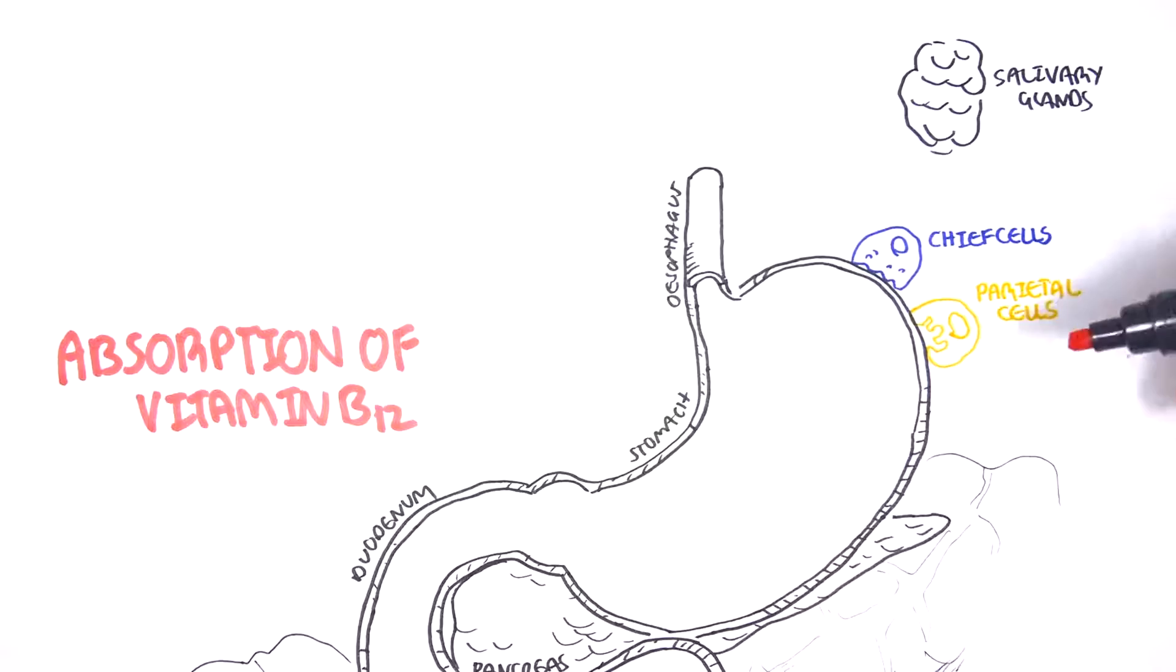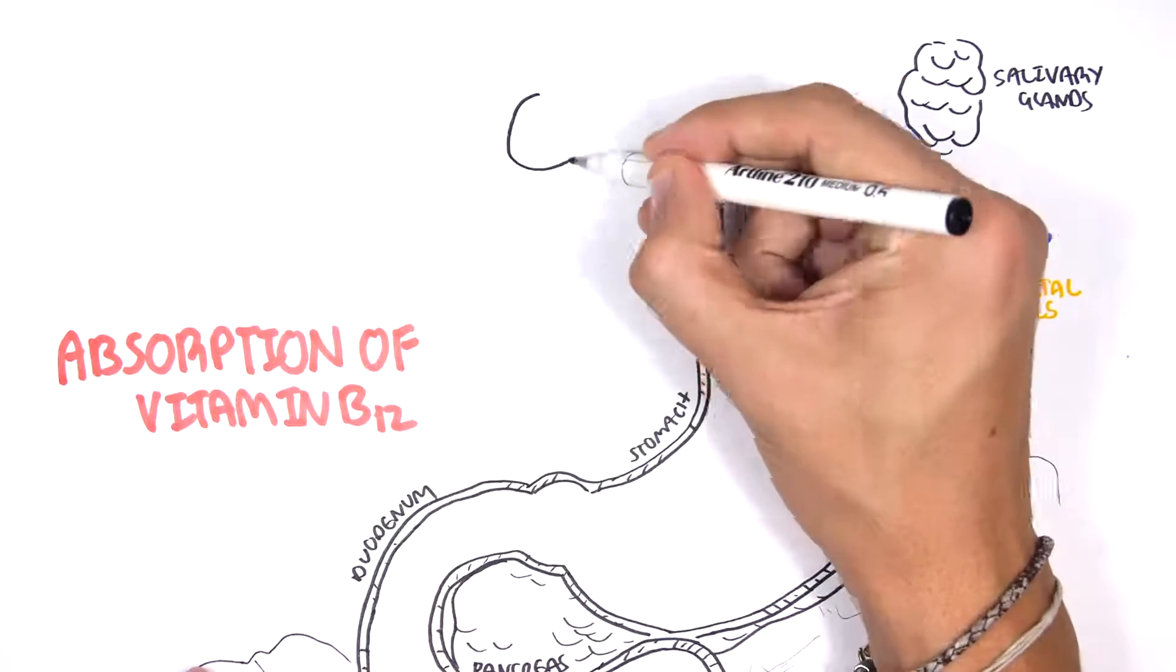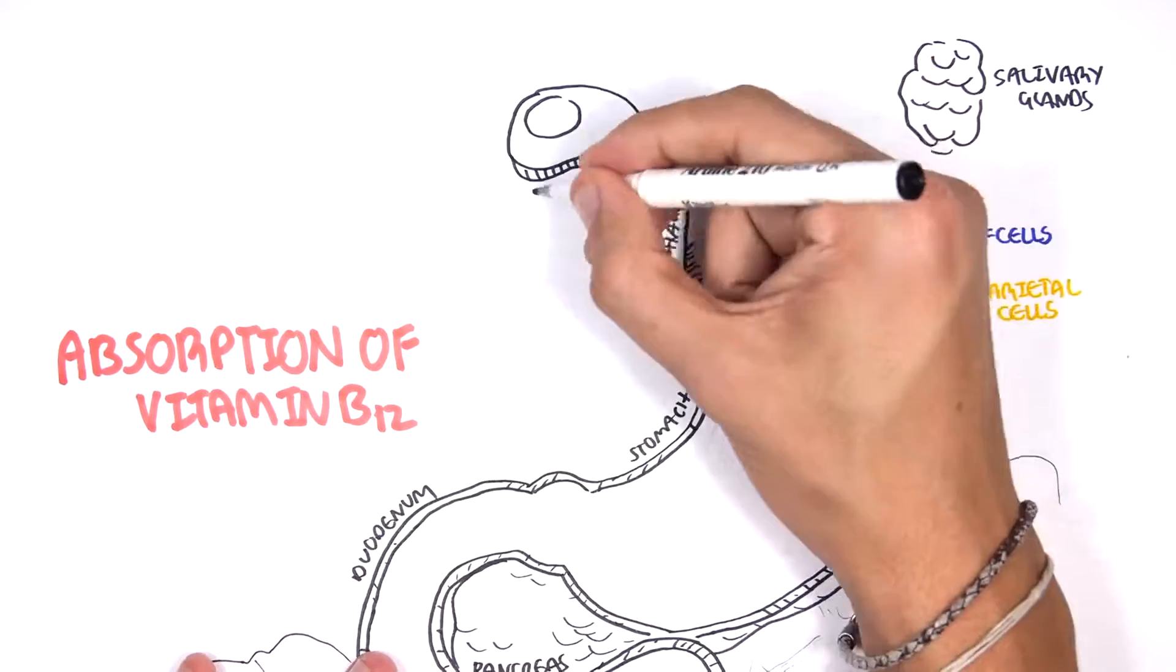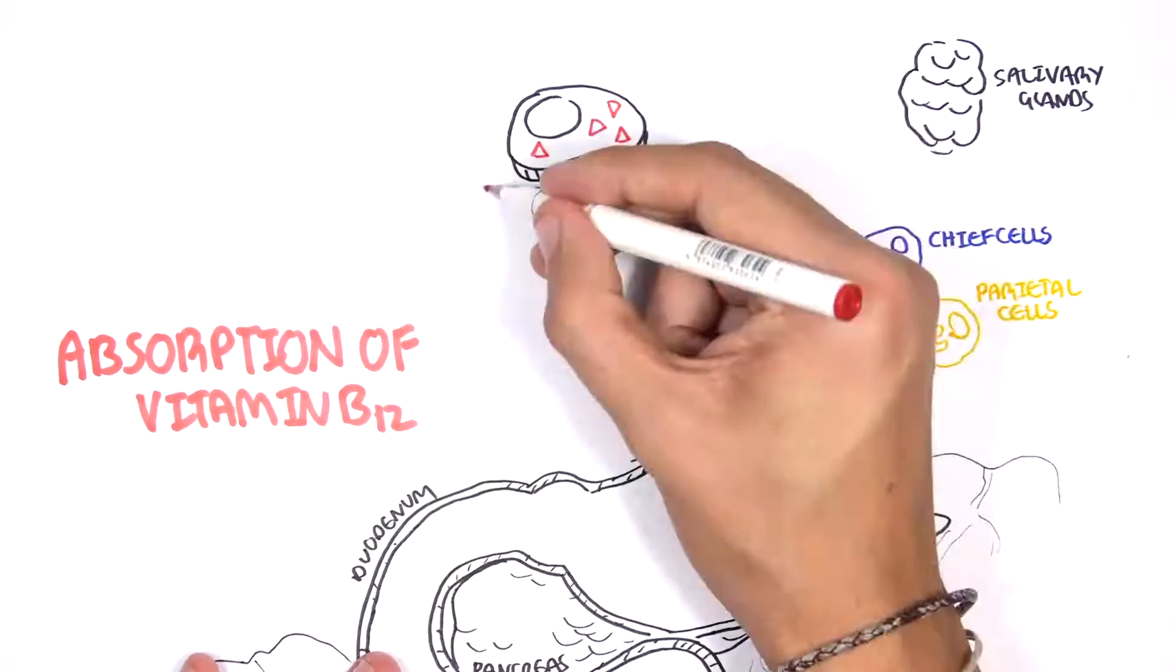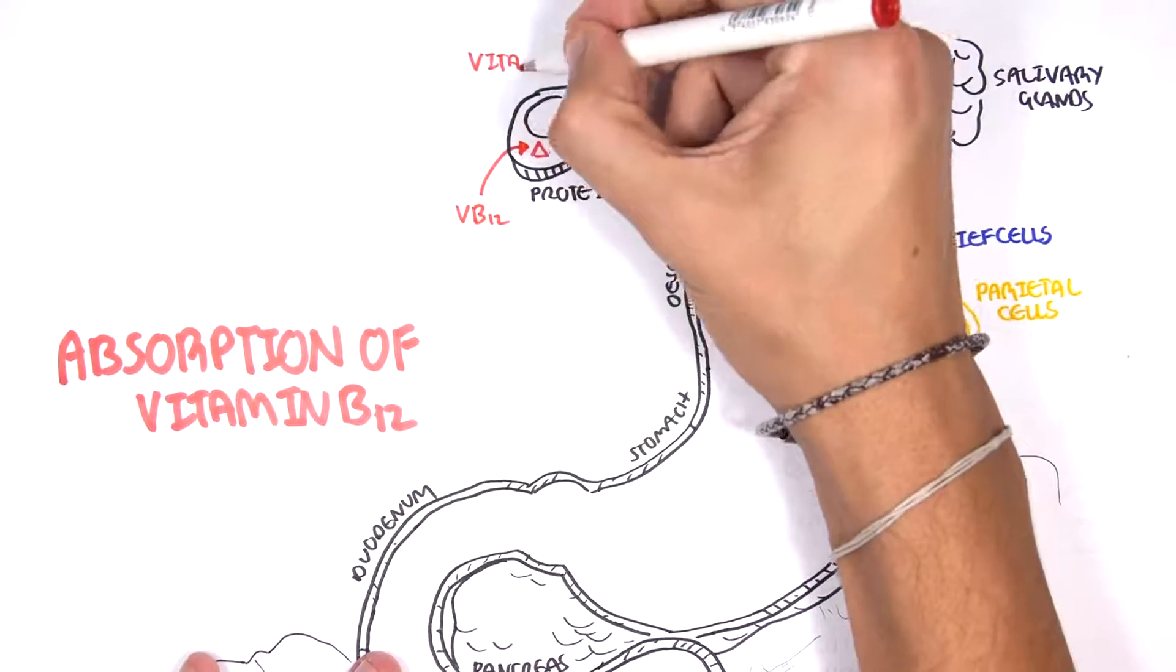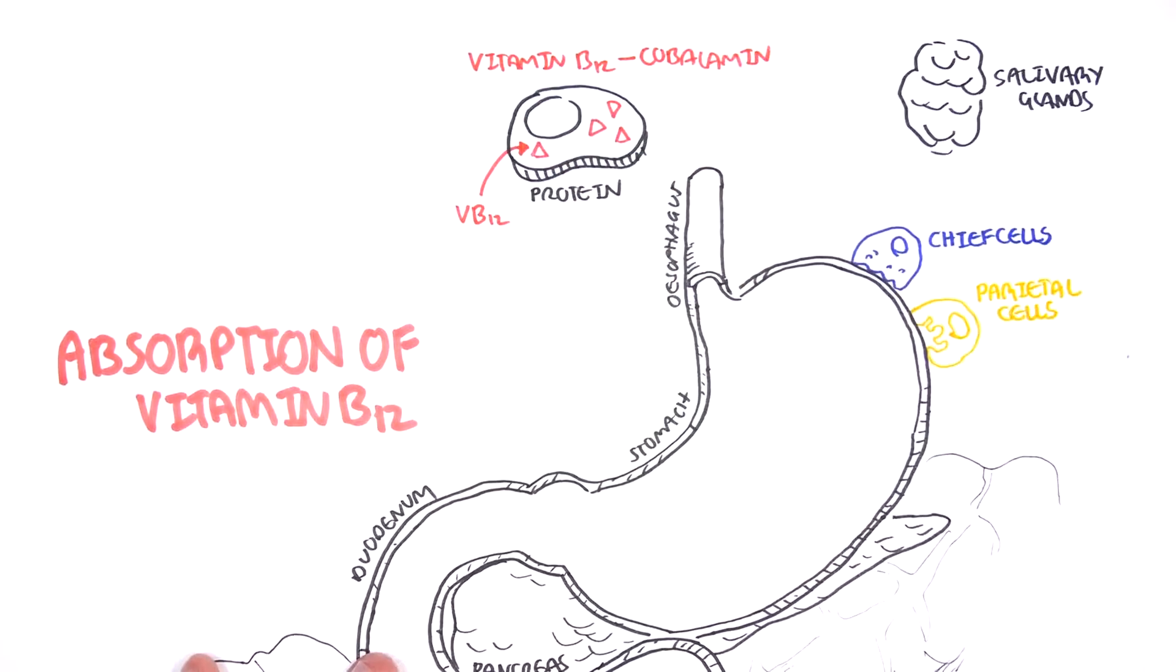So where do we get vitamin B12 from? We can get it from a variety of foods such as egg, milk, fish, and red meat. So here is a red meat which contains vitamin B12. Vitamin B12 is known formally as cobalamin.